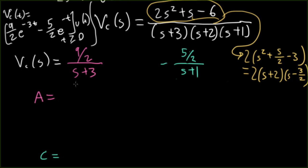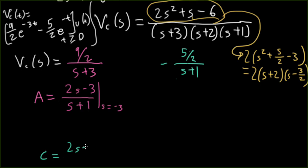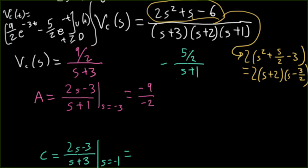As one final sanity check, let me recompute the PFE coefficients knowing there's no (S+2) term. Without S+2 in the denominator, A = (2S−3)/(S+1) at S=−3 gives (−6−3)/(−2) = −9/−2 = 9/2. And C = (2S−3)/(S+3) at S=−1 gives (−2−3)/(2) = −5/2. Everything works out. If you notice any mistakes in these derivations, please leave a comment below.